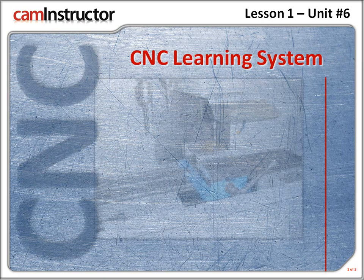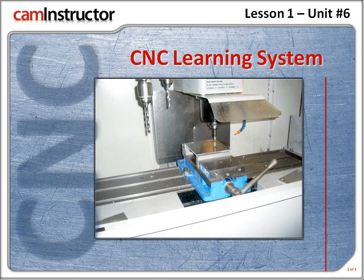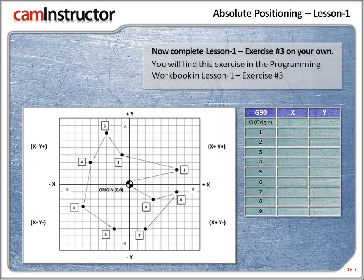Hello there and welcome back again. Let's work out the absolute coordinates for positions 1 through 9. Absolute coordinates are measured from the 0 position. The origin, x0, y0, is located at the center of the grid. So our first position, our origin, is x0, y0.